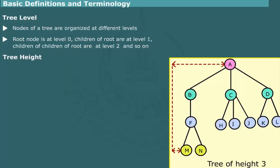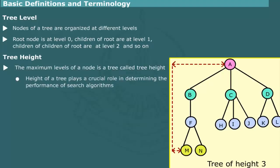Height of a tree. The maximum level of a node in a tree is called height of a tree. Thus, the tree structure in figure has height 3. As we shall see later, the height of a tree plays a crucial role in determining the performance of search algorithms. A tree with a shorter height can be searched faster than an equivalent tree with greater height containing the same data elements.